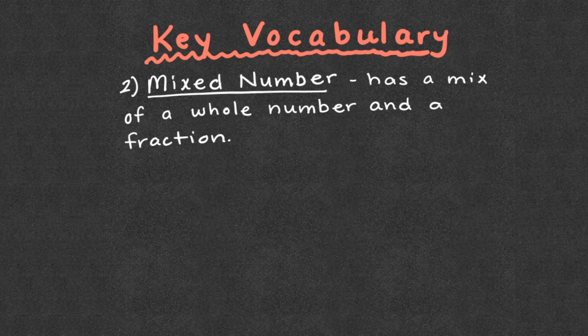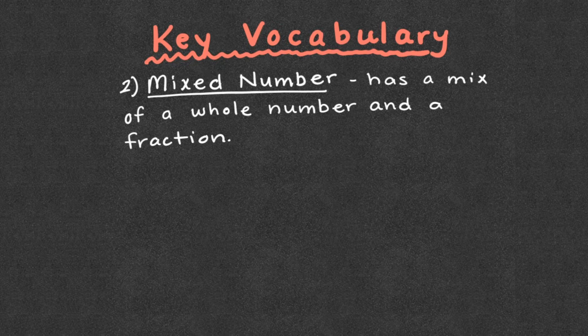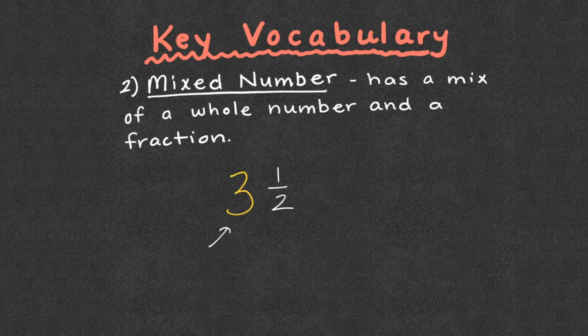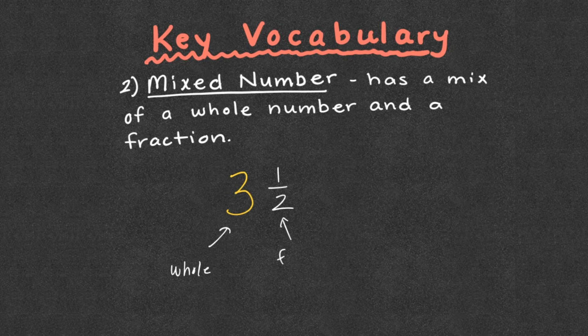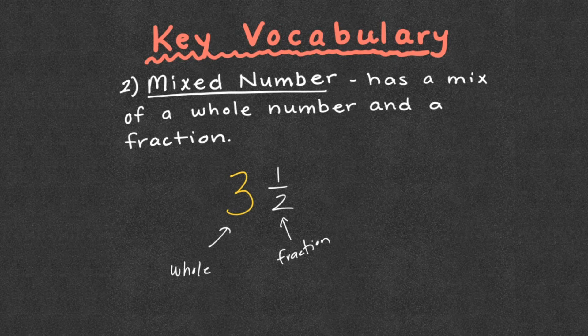Two, if we have mixed numbers, that has a mix of a whole number and a fraction. So if we looked at something like 3 and 1 half, we have 3 which is our whole number and we have this as our fraction. It's called a mixed number because it is a mix of a whole number and a fraction.